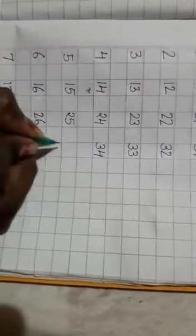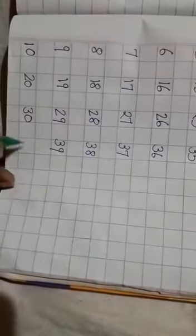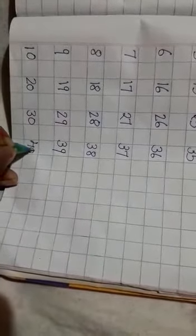Then write 31 to 40. 31, 32, 33, 34, 35, 36, 37, 38, 39, 40.